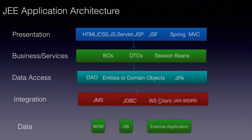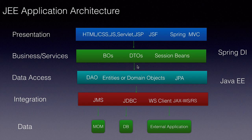Finally, to glue all these layers together — that is, for one layer to use another — we do dependency injection, typically using Spring dependency injection. Starting from Java EE version 6, we can use the built-in CDI inject annotations, which makes dependency injection much easier. All application servers supporting Java EE 6 and 7 have built-in support for dependency injection, so we can do that without using Spring as well.